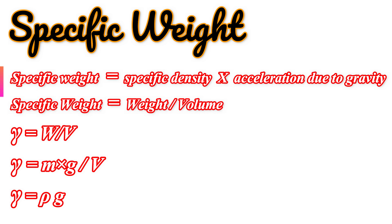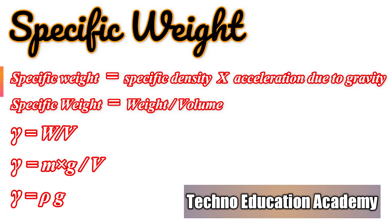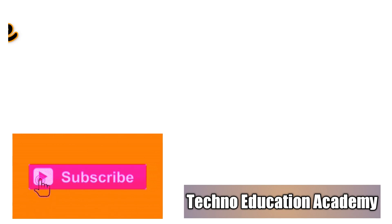Specific weight is denoted by the Greek letter gamma. Specific weight gamma equals weight per unit volume: gamma = W/V. Since W = mg, gamma = mg/V, so gamma = rho × g. That is, specific weight equals rho into g. The next property is specific volume.